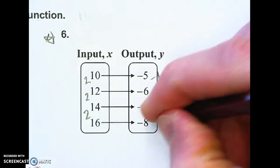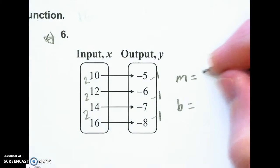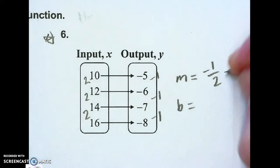So minus 1, minus 1, minus 1, and I'm going to write my slope, y over x. So minus 1 over positive 2, that's just negative 1 half.